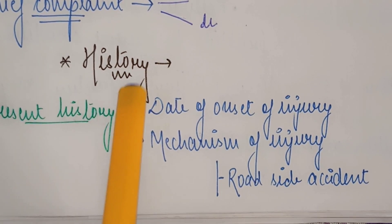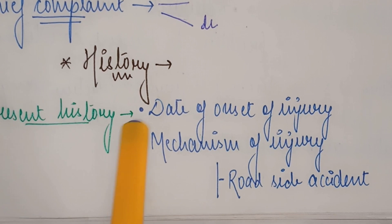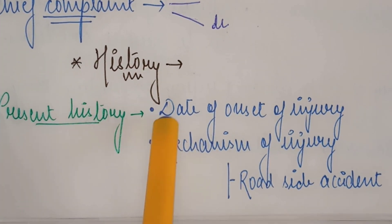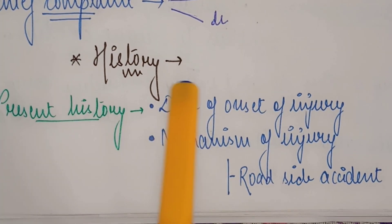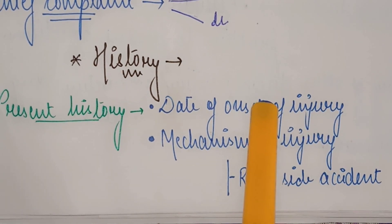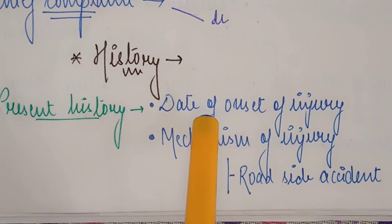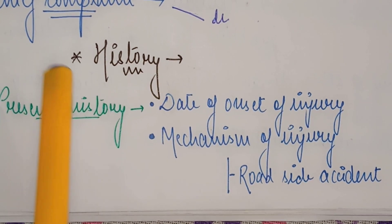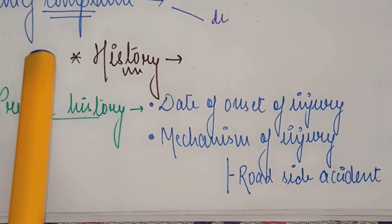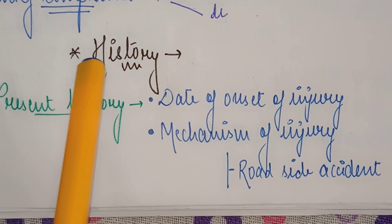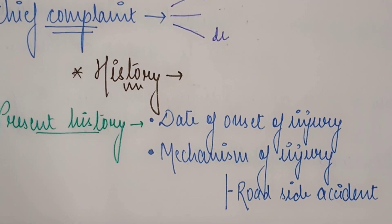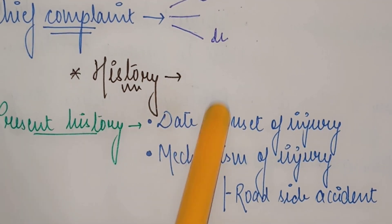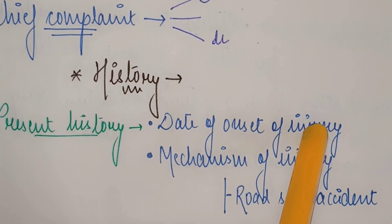We will focus on what we have in the present history. The first and foremost thing is the date of onset of injury. If a patient is complaining of pain for 5 days, then the first date — day one or day zero — is recorded. The date of assessment is the most important.